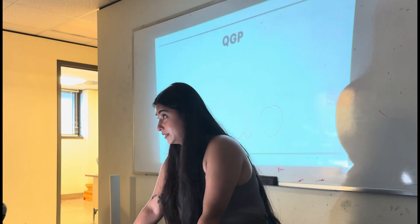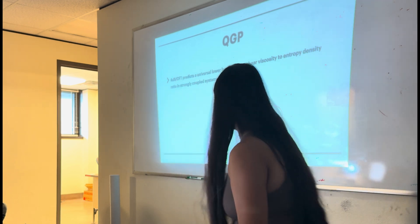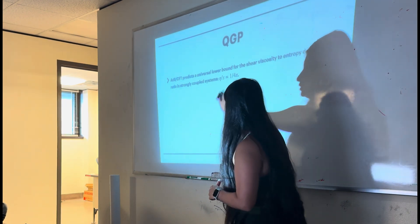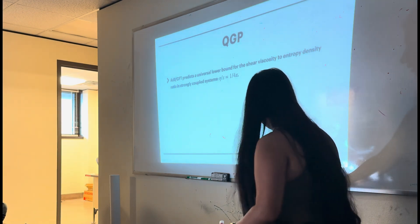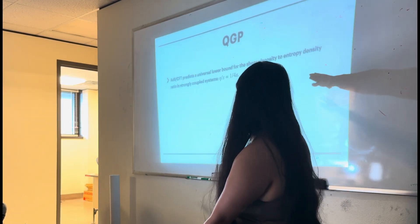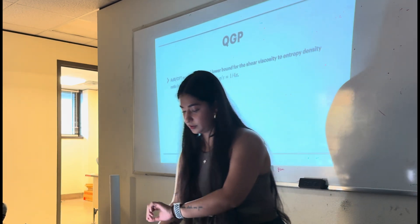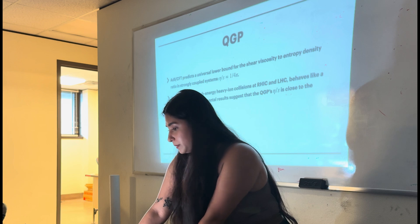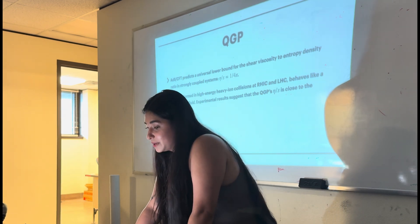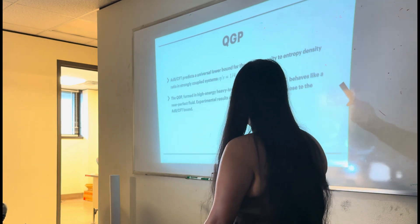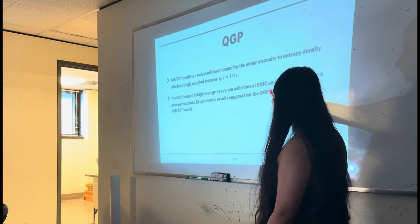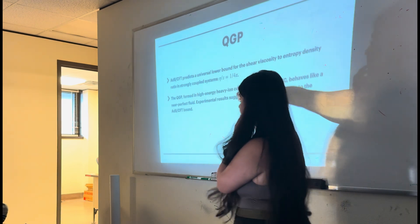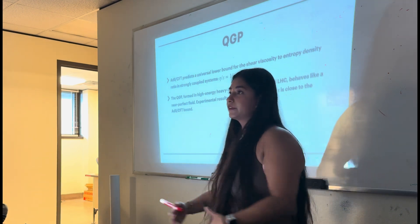So now, in order to have more validation and understand QGP in AdS/CFT, the AdS/CFT predicts a universal bound for the shear viscosity to entropy density, and that lower bound is given by this. I do have a derivation that essentially gets this relation, but I don't think I will be having time. If anyone's interested, they can just talk to me. So, and the QGP formed in high-energy heavy ion collisions at RHIC and LHC behaves like a near-perfect fluid. And the experimental data suggests that the QGP formed, the ratio of that, the ratio of viscosity to entropy of the QGP formed is very close to that AdS/CFT bound. The smaller that bound is, the more perfect the liquid is.